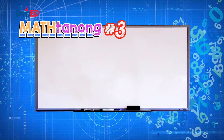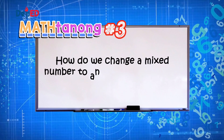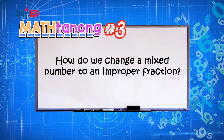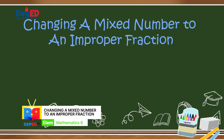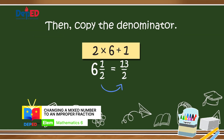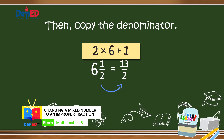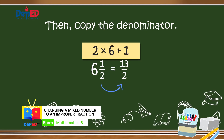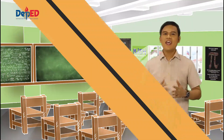Matanong number three: How do we change a mixed number to an improper fraction? In changing a mixed number to an improper fraction, we multiply the denominator by the whole number and add to the numerator, then copy the denominator. For example, 6 and 1 half: 2 times 6 plus 1 equals 13. Copy the denominator too. Therefore, 6 and 1 half is equal to 13 halves.